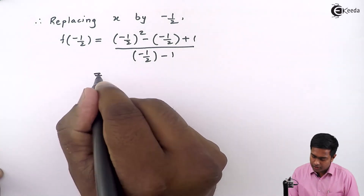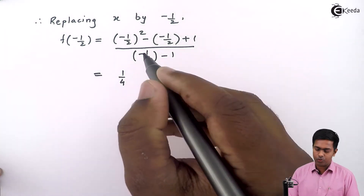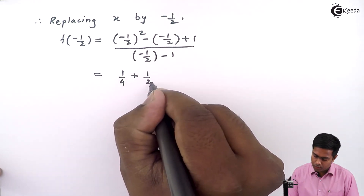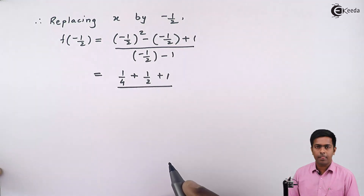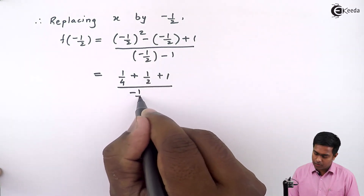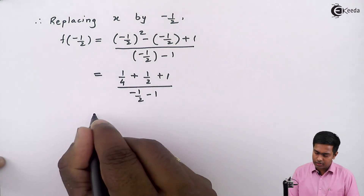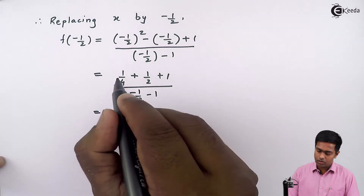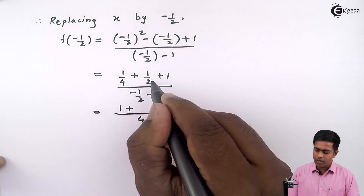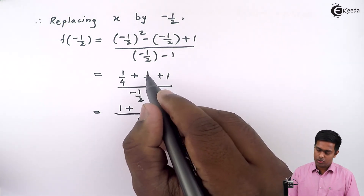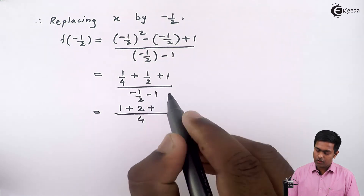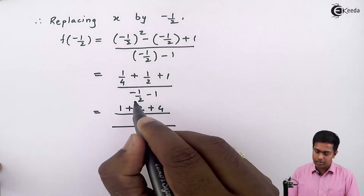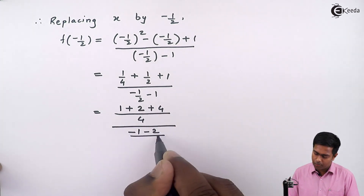Now after solving this we get 1 upon 4 as the square of minus 1 by 2. This minus minus becomes plus 1 by 2, plus 1, whole divided by minus 1 by 2 minus 1. Now after solving this we get 4 as the LCM in the numerator. So 1 as it is, similarly we multiply by 2 so we get 2, plus we multiply the last term by 4 so we get 4, upon minus 1 minus 2 upon 2.